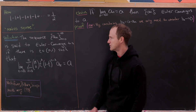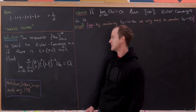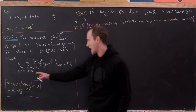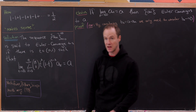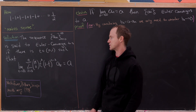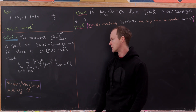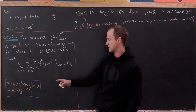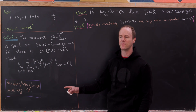The sequence defined by a_n is said to Euler converge to a number a if there is a t value between 0 and 1 such that the limit as n goes to infinity of the sum as k goes from 0 to n of the binomial coefficient n choose k times t to the k times (1 minus t) to the (n minus k) times a sub k is equal to a. We are referencing a paper a little bit for part of our proof.